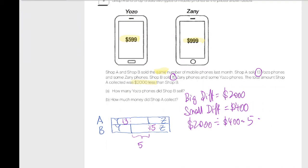Caleb, if Shop A sold 13, how many Yozo phones will Shop B sell? 13 plus 5? Actually, it's 13 minus 5, because if you check it out, Shop A has a longer Yozo phone. Yeah, so this is actually 8. Which means, if you know that this is 8, then Zeny phone would be 10.